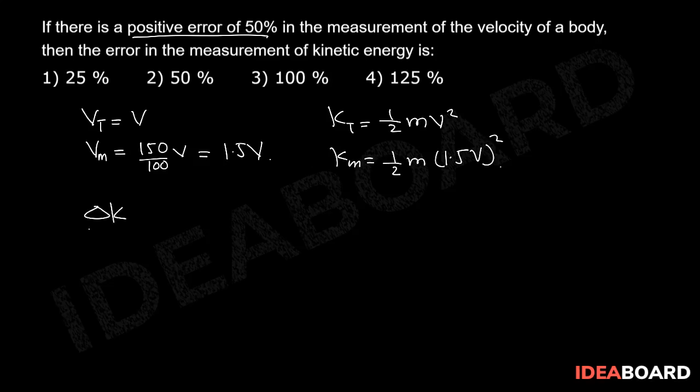error in kinetic energy is delta k by k into 100, that should be equal to km minus kt by kt into 100. By substituting the values, we will end up with (1.5v) whole squared minus v squared